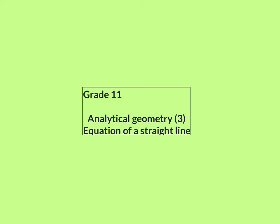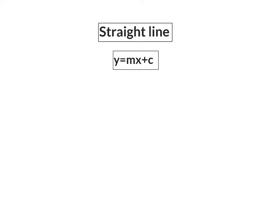In lesson 3 on Analytical Geometry for Grade 11, we are going to have a look at the equation of a straight line. We already know that the standard equation for a straight line is y is equal to mx plus c. Here, m indicates the gradient and c the y-intercept of the line. These two values can be calculated in different ways, depending on the information that was given.